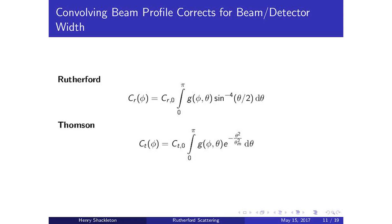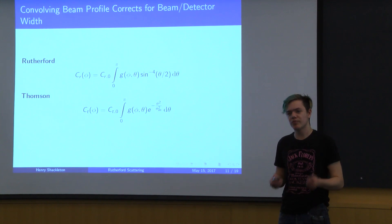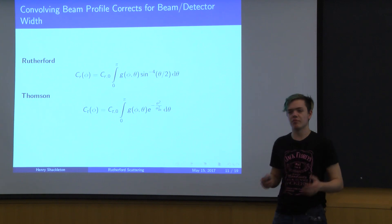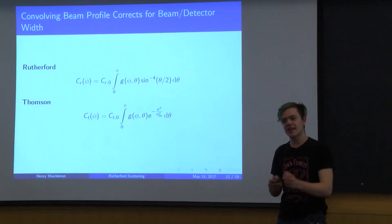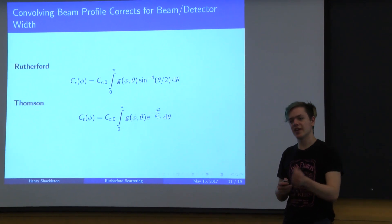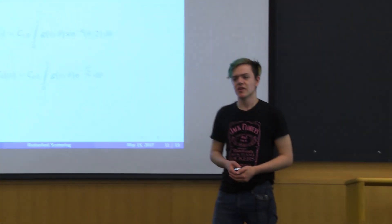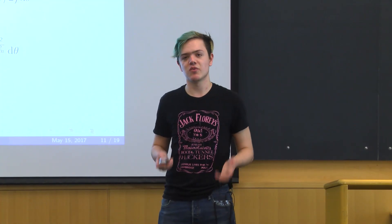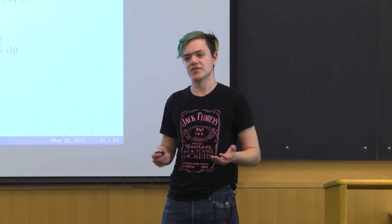We accommodate this in our equations via a convolution. Intuitively, we take the Thomson or Rutherford scattering rate — the probability of scattering at angle theta — multiply it by the probability of that scattering being detected given our howitzer at angle phi, and integrate over all theta. This gives us two predicted counting rates as a function of howitzer angle phi — one for Rutherford theory and one for Thomson theory — which we can compare to our data given the geometric considerations of our apparatus.